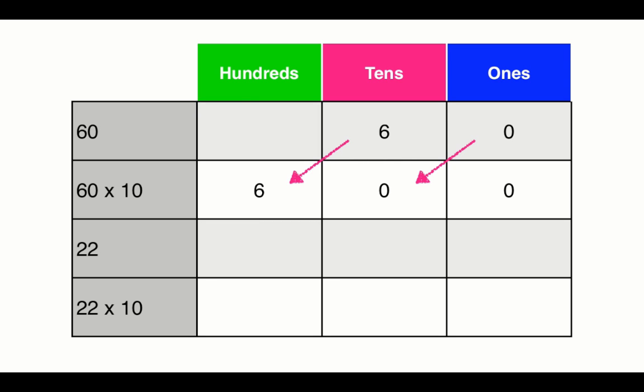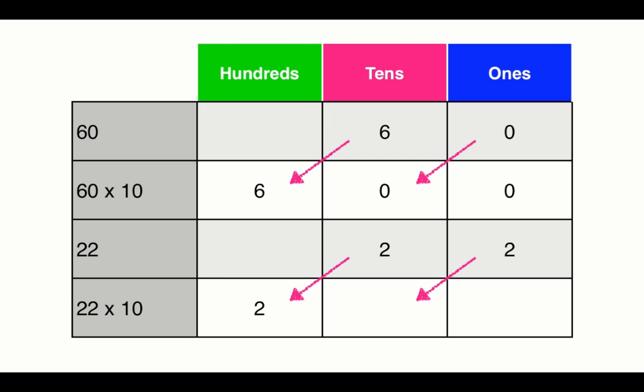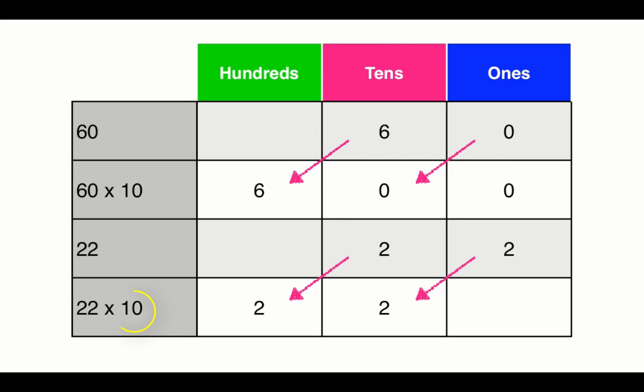Our next problem asks us to multiply 22 times 10. Write 22 into your place value chart, placing a 2 in the tens and a 2 in the ones. Now as we multiply by 10, we shift one place value to the left, moving the 2 from the tens to the hundreds and the other 2 from the ones to the tens. Use the 0 from the 10 in the ones column to get your answer of 220.